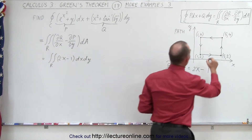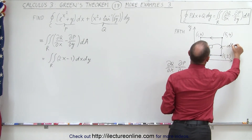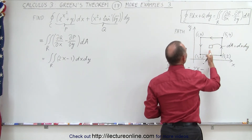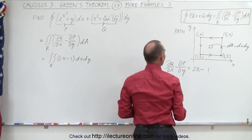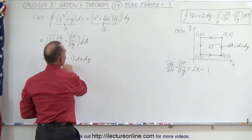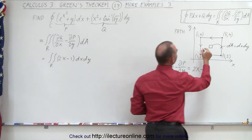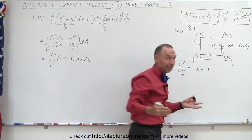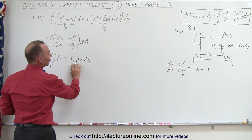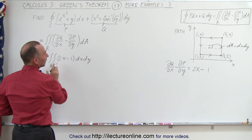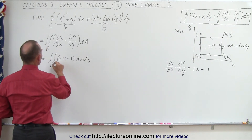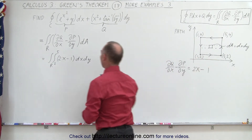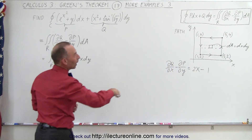We take a small area element dA equal to dx times dy. We can integrate first in the x direction and then in the y direction. x is going to go from 1 to 5, and in the y direction from 2 to 4.